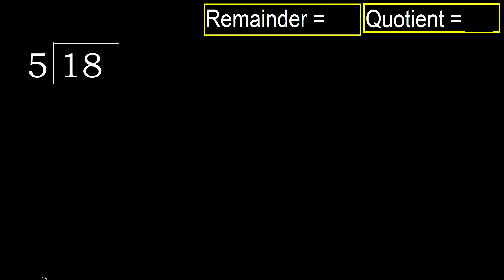18 divided by 5. 1 is less, therefore next. 18 is not less, therefore work with 18. 5 multiplied by which number is nearest to 18 but not greater?